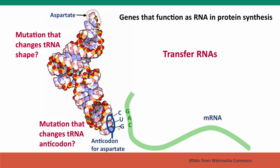Even more dramatic are the effects of mutations that change the actual anticodon. Mutations in any of the three anticodon positions in the transfer RNA will change which codon the transfer RNA binds to. For example, a mutation that changed that G into a U — a mutation in the DNA that changed that G into a T — would result in an aspartate transfer RNA charged with the amino acid aspartate but with an anticodon that does not recognize the aspartate codon in messenger RNA. Instead, it would bind at a different codon and insert aspartate where there should be a different amino acid.